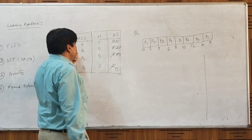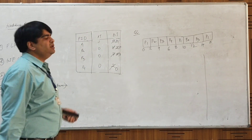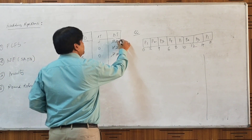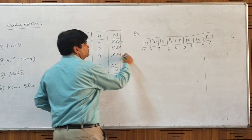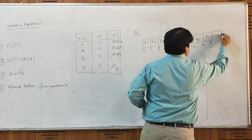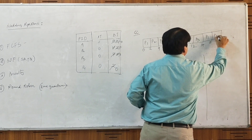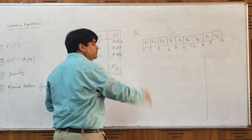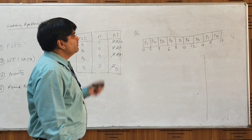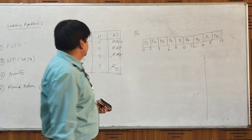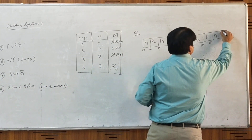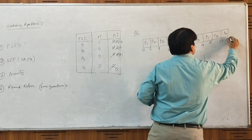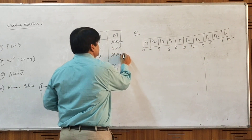From t=15, we schedule P3. Even though P1 finished early (at 15 instead of 16), the CPU cannot be kept idle. So at t=15 we schedule P3 for 2 seconds. Even if there is only one process remaining in the queue, we can only give a quantum of 2 seconds at a time. At t=17 we provide another opportunity to P3 to complete its execution. And with that, all processes complete their execution.